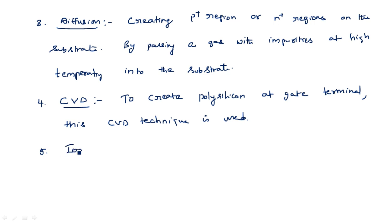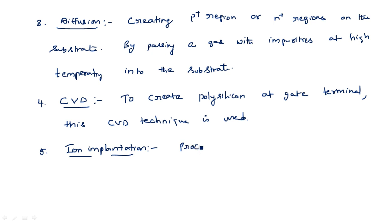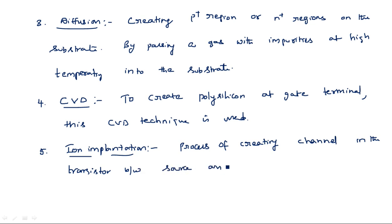The fifth step is ion implantation. Ion implantation is the process of creating the channel between source and drain. There are two types of transistors: depletion mode and enhancement mode. In depletion mode, the channel is already created by default. In enhancement mode, there is no channel by default — it must be created by application of VGS. Ion implantation is the process used to create this channel in the transistor.